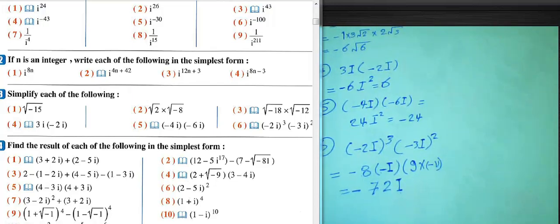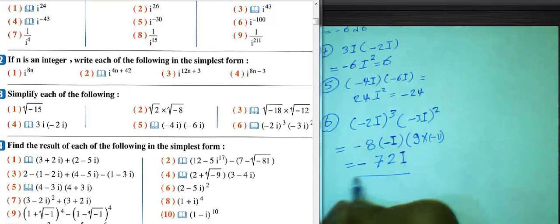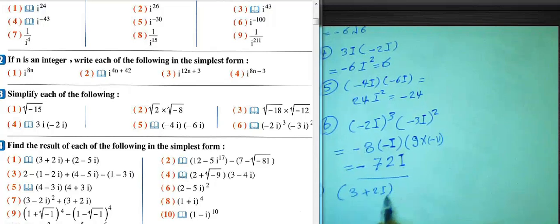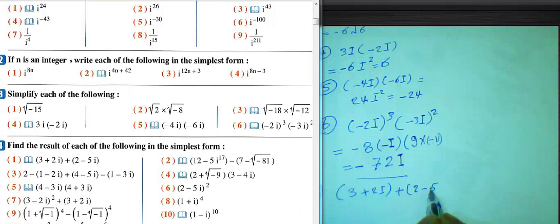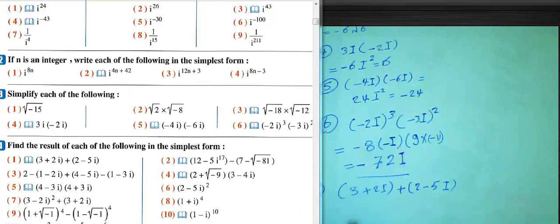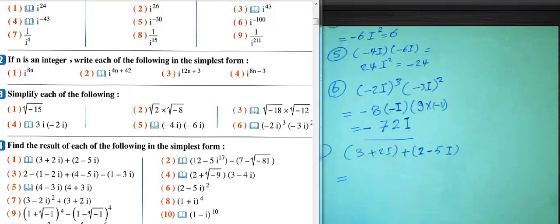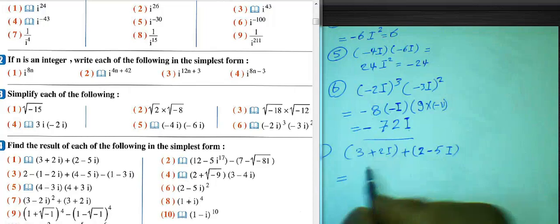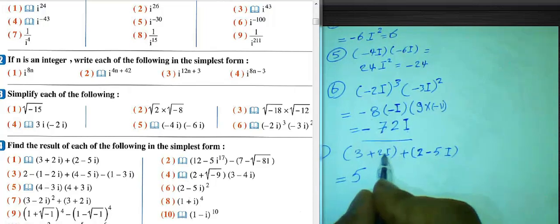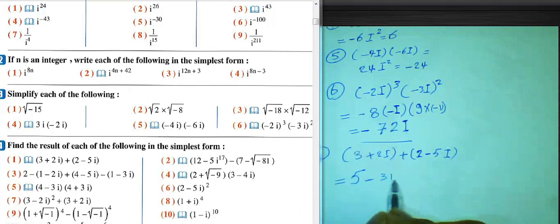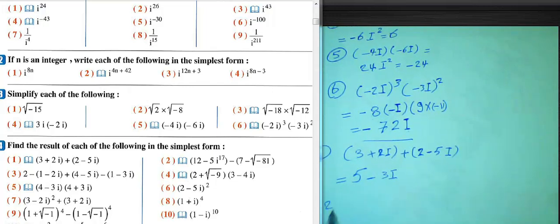Question 4: find the result of each of the following. Number 1: (3 + 2i) + (2 - 5i). We combine real and imaginary parts separately: 3 plus 2 equals 5, and 2i plus negative 5i equals negative 3i. The result is 5 minus 3i.